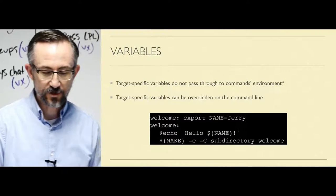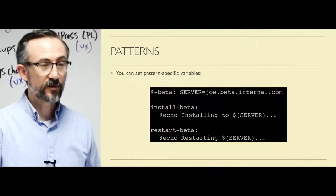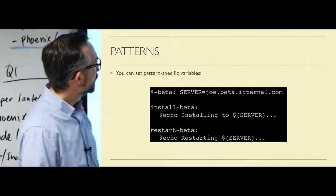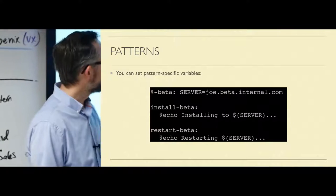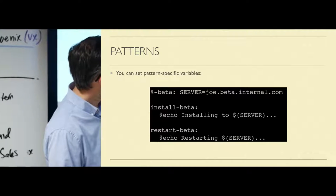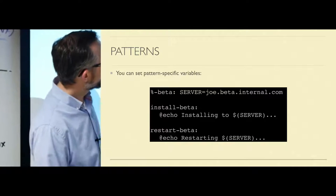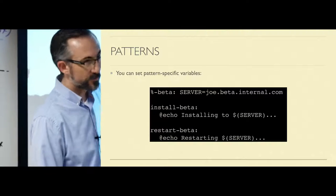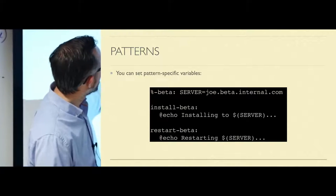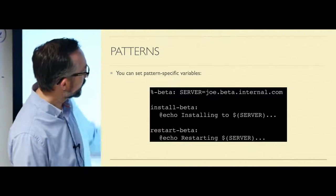Don't feel bad if you didn't catch all of that — we'll be covering examples that will illustrate these better. You can set pattern-specific variables. In Make, the percent sign is a wildcard operator. It will match things. In this case, if I said 'make install-beta,' this matches. The variable 'server' will be set to that string. Then the recipe runs 'echo installing to joe.beta.internal.com.' Again, that's not a shell variable — it's a Make variable. Before the shell gets it, it has already been changed from $server to joe.beta.internal.com. 'restart' also matches because it's something-beta. This is a way to set one variable for multiple targets.